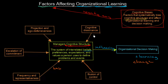In the upcoming videos, we are going to study cognitive dissonance; projection and ego defensiveness; escalation of commitment; frequency and representativeness; and illusion of control. These are the factors that can bias a manager's mind and then influence decision making, learning, and of course organizational change.